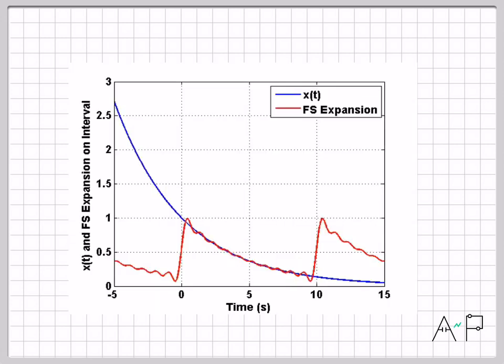If we add more terms to our sum, though, here is the representation for N equals 10. So this is summing from N equals minus 10 to 10. So that's 21 total terms, quite a bit more terms in our sum. Now the representation on this interval is looking pretty good. There's still some wobble there, but in terms of representing the original x(t) accurately, this is a more accurate representation.